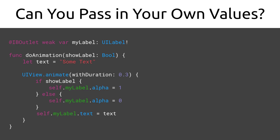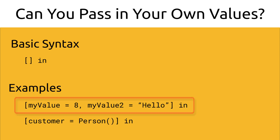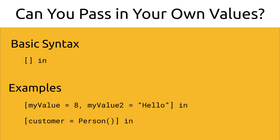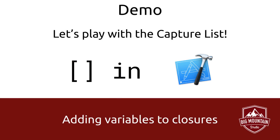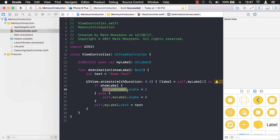Can you pass in your own values into a closure? The answer is yes — in Swift you can do this with a capture list. The brackets indicate the capture list is actually an array so you can pass in multiple variables. You can instantiate value types or reference types. In our code we can create a label variable to represent 'self.myLabel'. Let's go into Xcode — I'm going to create a capture list with a label variable to represent 'self.myLabel', and then inside the closure replace 'self.myLabel' with 'label'.